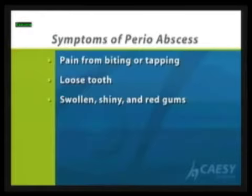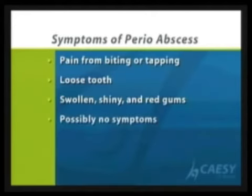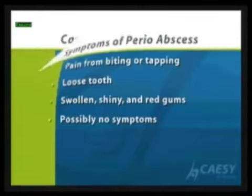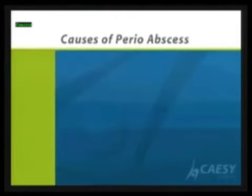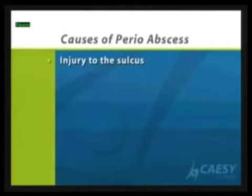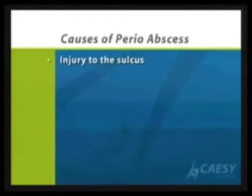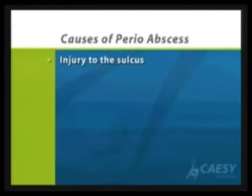These abscesses are usually around your wisdom teeth. A lot of people that I see very often have this around their wisdom teeth when it's partially impacted — the gum starts to swell up around that area, and that's a periodontal abscess.